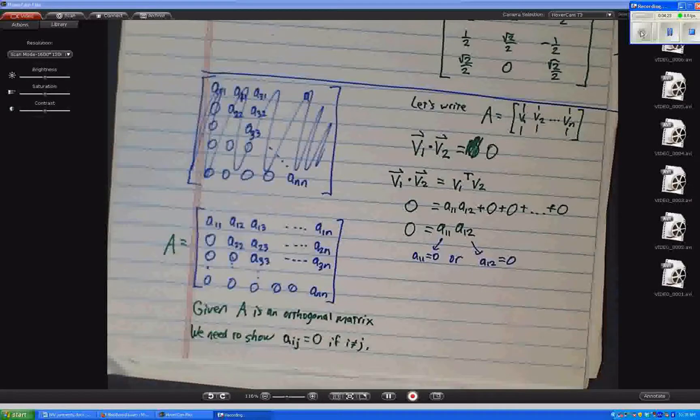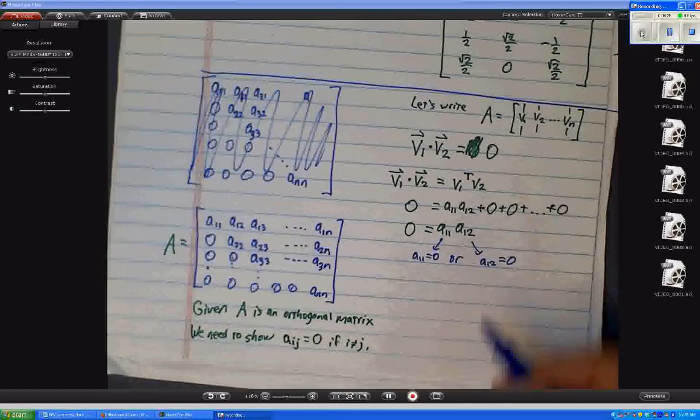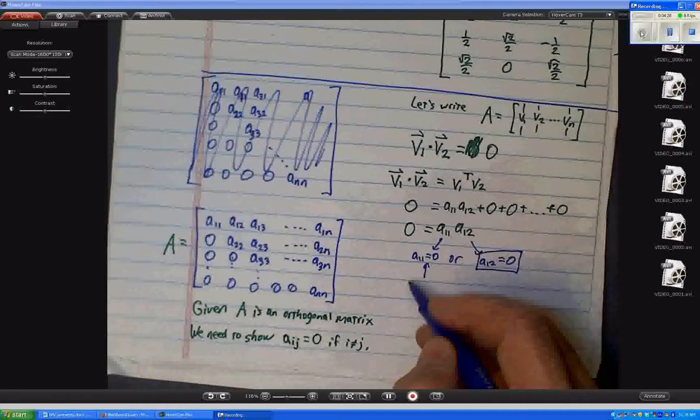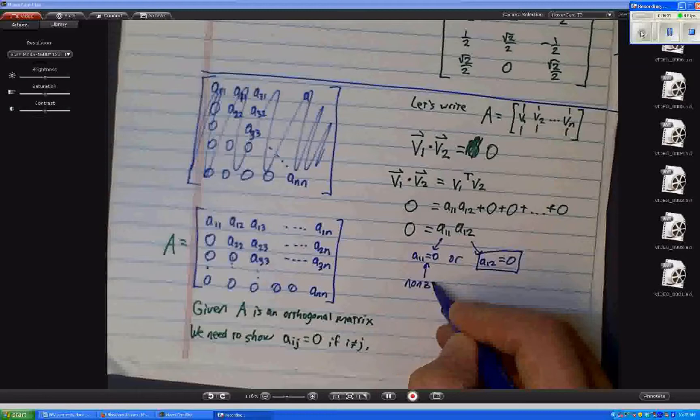Well, then what? It has to be this one, right? We know this is non-zero. Otherwise, you couldn't have a unit vector.